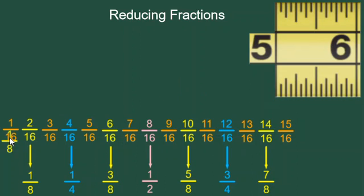Here is an example of reducing one of the yellow fractions. 2 sixteenths has a 2 and a 16 in the numerator and denominator. 2 and 16 have a greatest common factor of 2. So I divide both top and bottom by 2 and I get 1 eighth. 2 sixteenths equals 1 eighth of an inch.